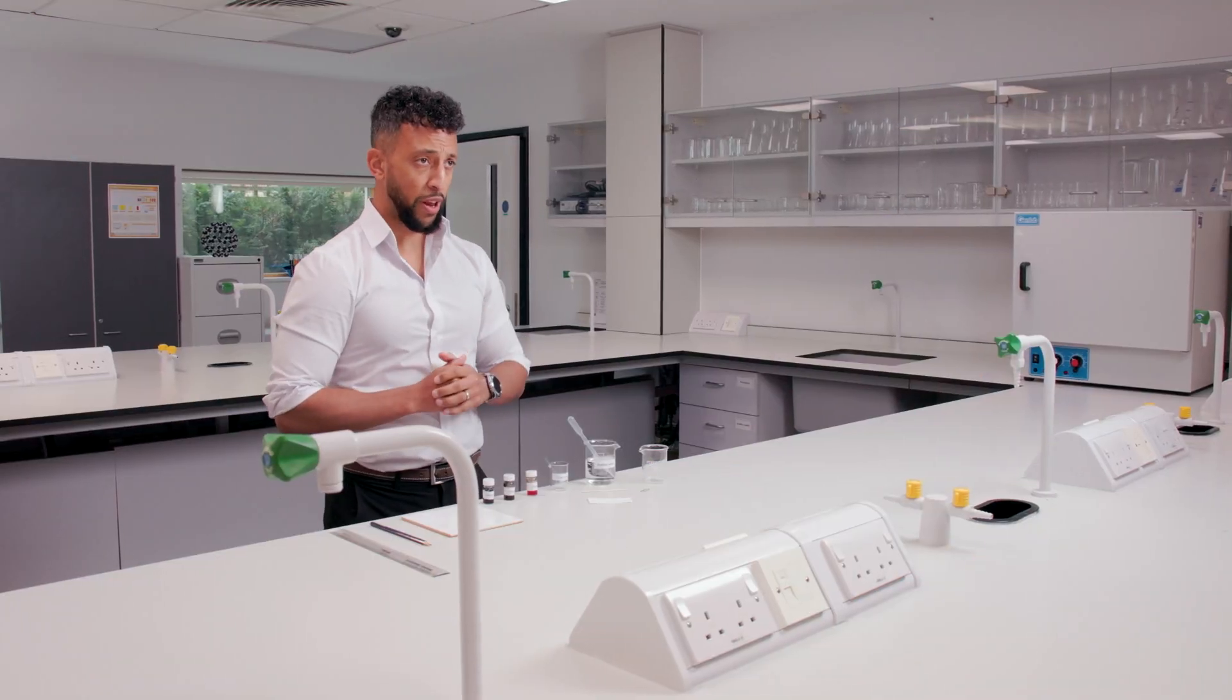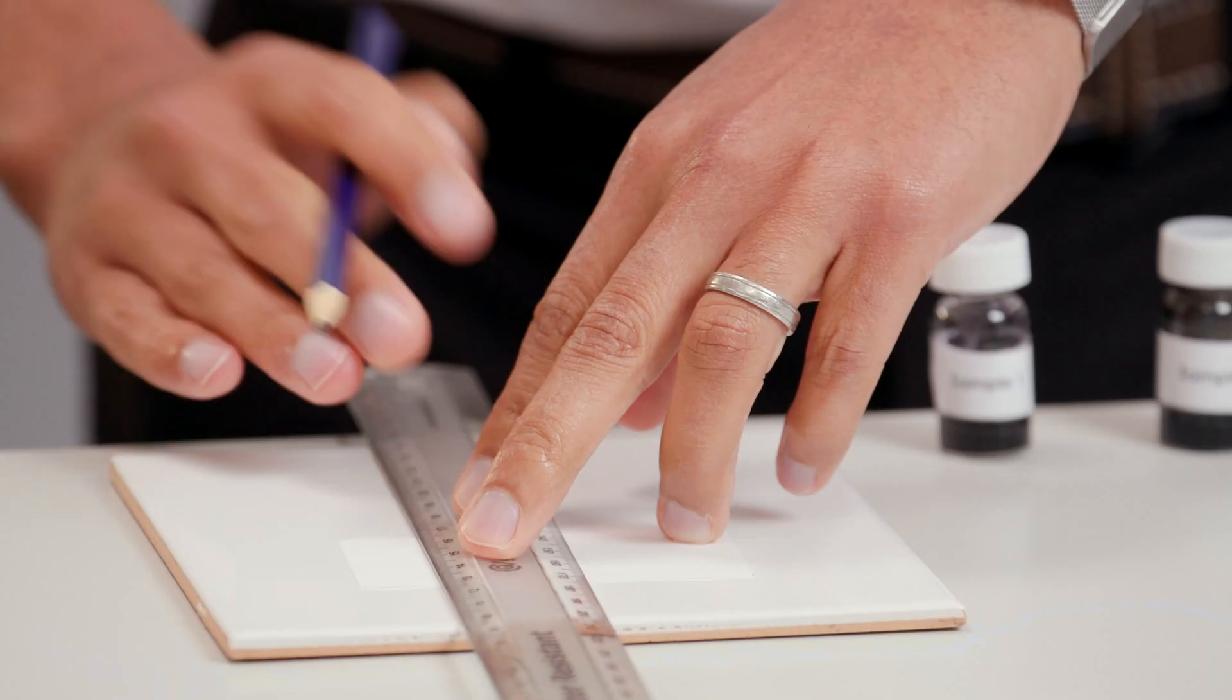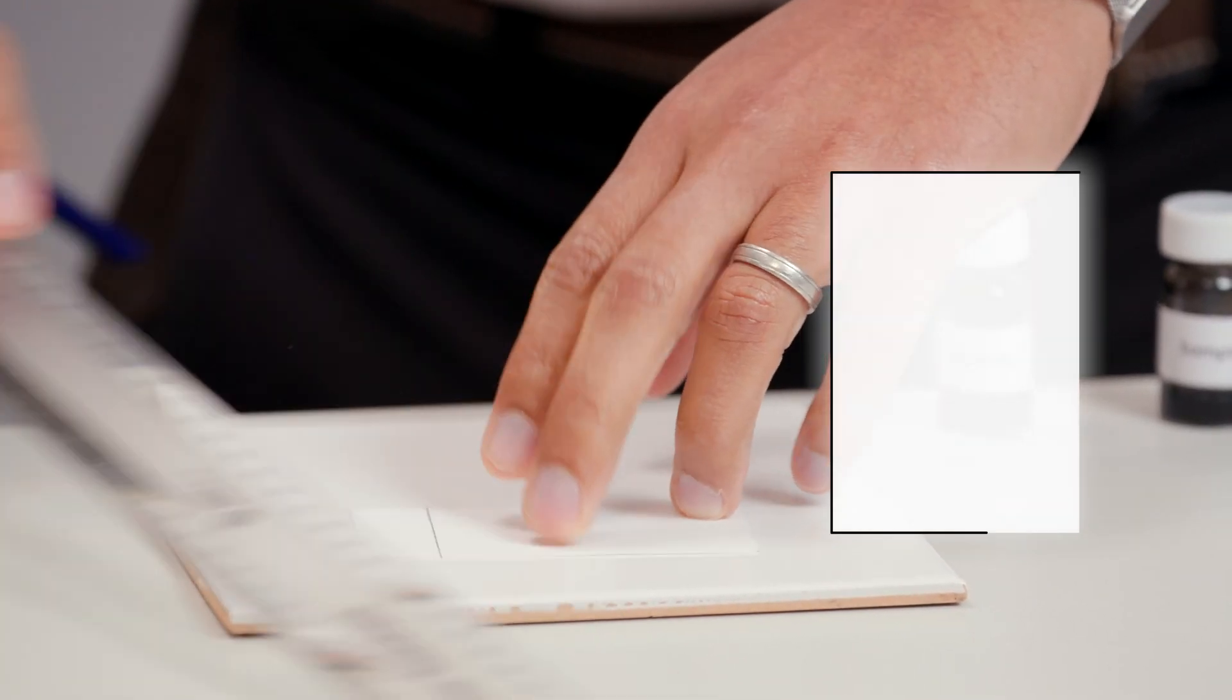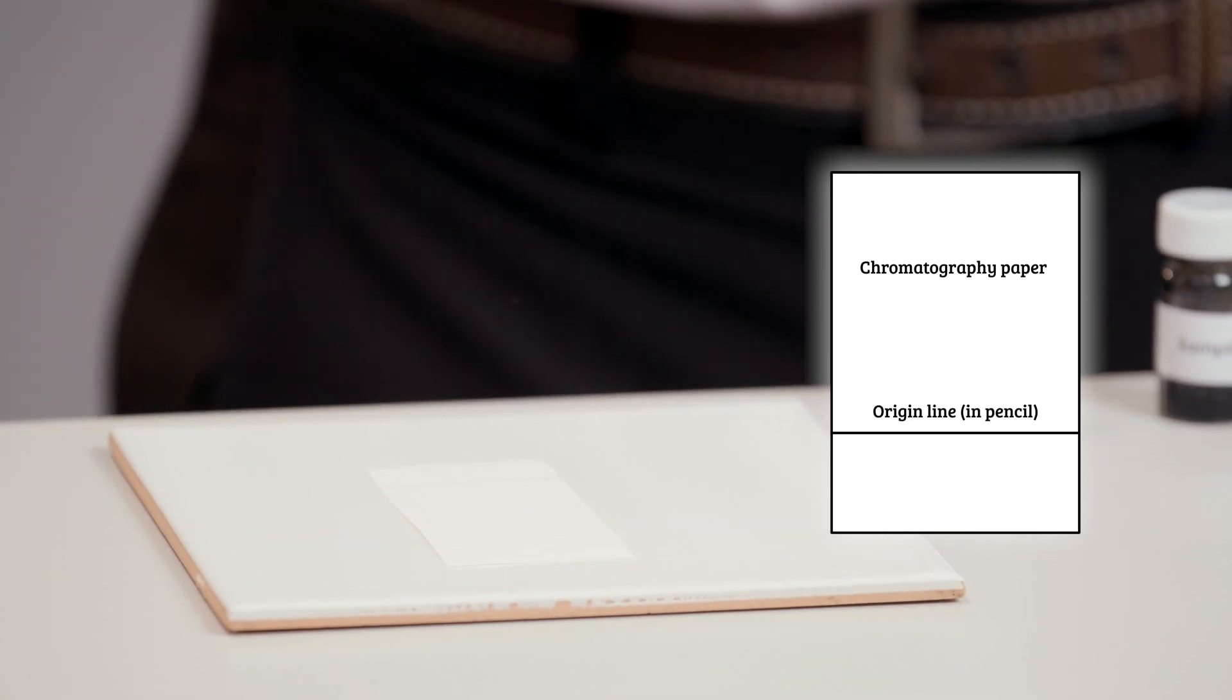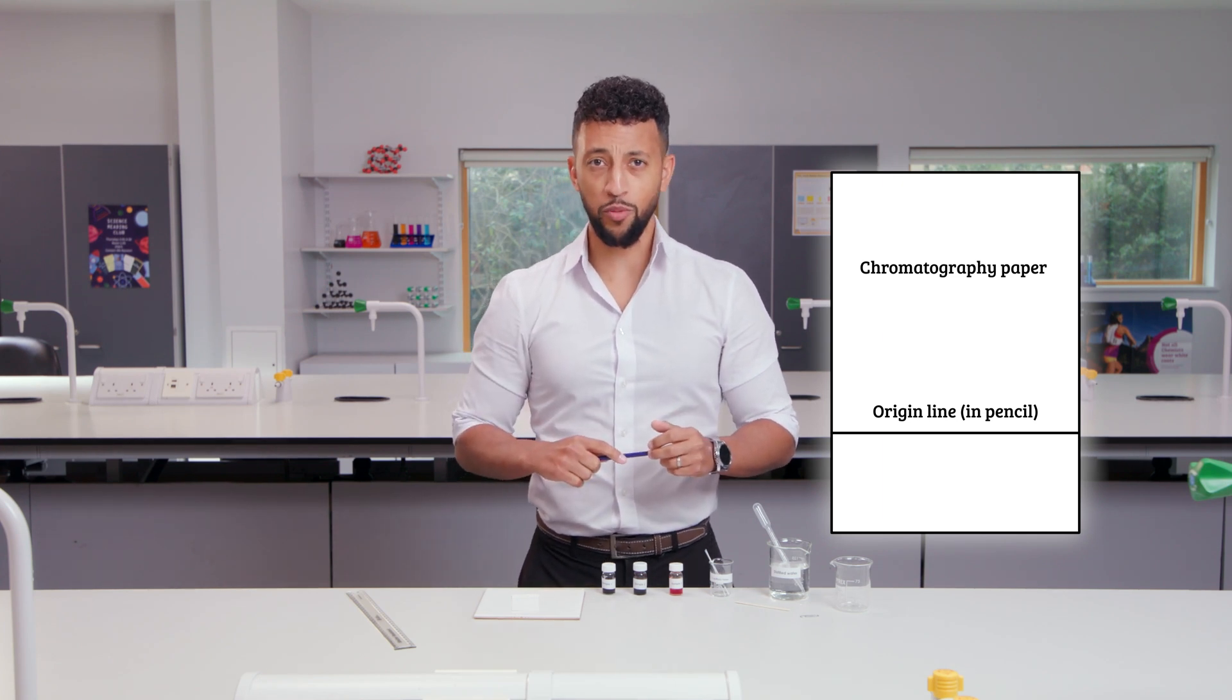First, draw a pencil line a short way from the bottom of the paper like this. This is the origin line. The pencil is not soluble in water so it won't affect the experiment. You'll find out why this is important in a moment.